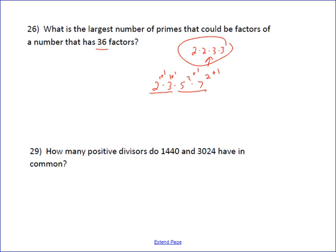Last one is probably the hardest one on the whole thing. And it says, how many positive divisors do 1,440 and 3,024 have in common? Well, the actual answer is, the way you do it is, it's the number of factors of the greatest common factor. So you actually have to find the greatest common factor of these two first. So let's go through and do this.